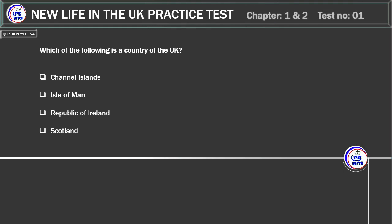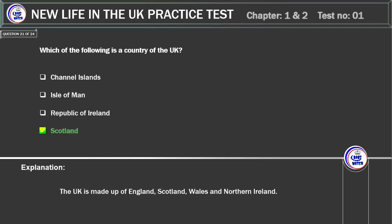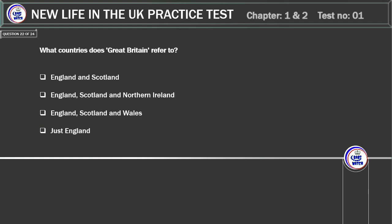Which of the following is a country of the UK? Channel Islands. Isle of Man. Republic of Ireland. Scotland. Correct answer: Scotland. Explanation: the UK is made up of England, Scotland, Wales and Northern Ireland.